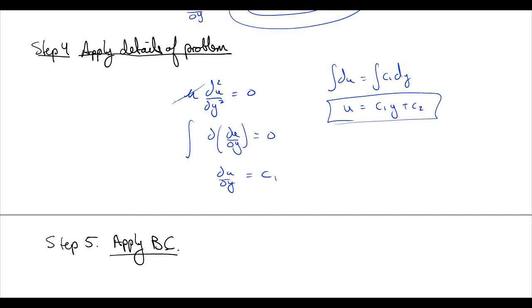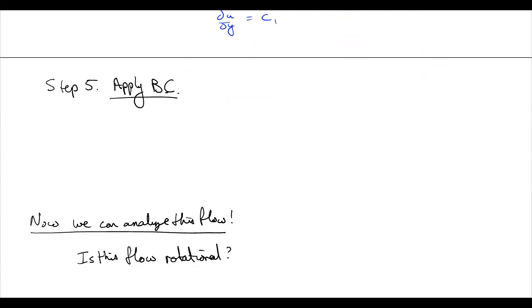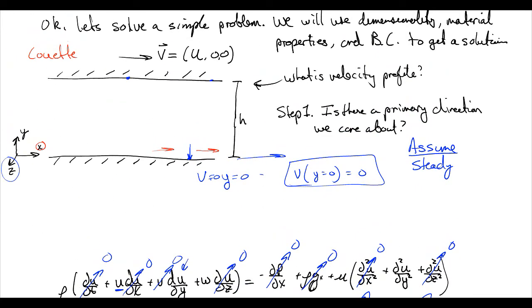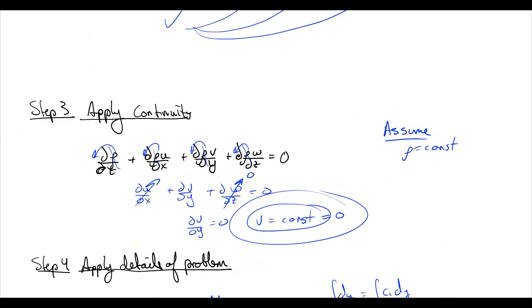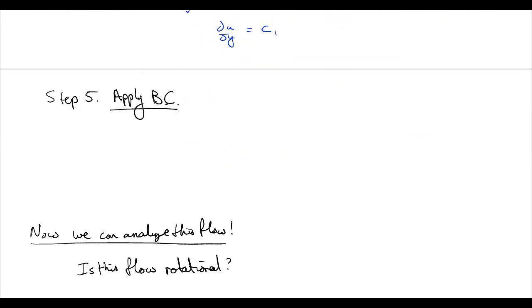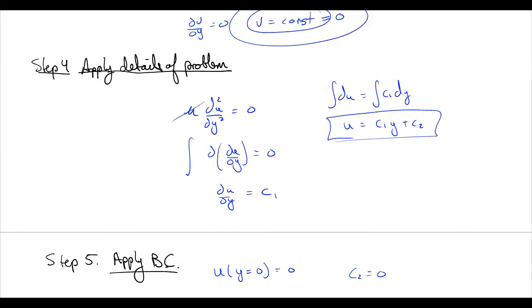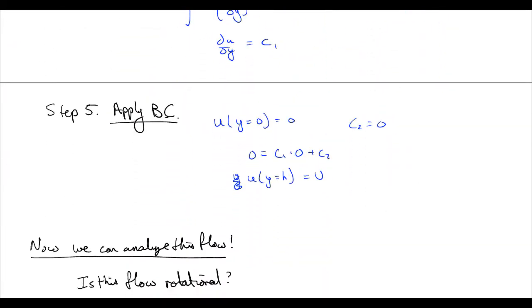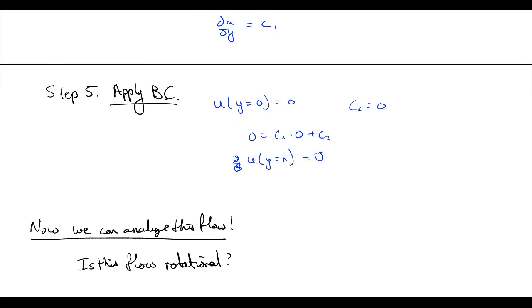Great. So we've applied the details of our problem. Now we've got to apply our boundary conditions. And what boundary conditions do we know? Well, we know two boundary conditions. We know our velocity at zero is equal to zero, and our velocity at h is equal to u. So u at y equals zero is equal to zero. So if we say that zero is equal to c1 times zero plus c2, we see that c2 has to equal zero.